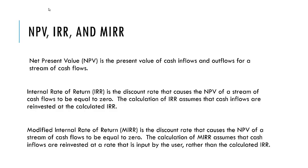MIRR, or the Modified Internal Rate of Return, is the discount rate that causes the NPV of a stream of cash flows to be equal to zero, just like the internal rate of return. The difference is that MIRR does not assume that cash inflows will be reinvested at the calculated IRR. For MIRR, we can put in our own assumed finance rate — the cost of the money — and the assumed reinvestment rate, the return we expect from reinvesting cash flows. We often use MIRR when we get conflicting answers between NPV and IRR for mutually exclusive projects, or when we get multiple IRRs, which I'll demonstrate today.